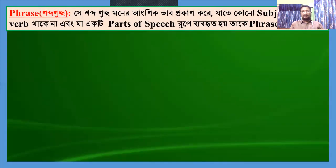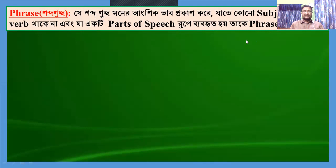Dear students, today I am going to teach you phrase and idioms. Phrase — shabda guccho. Je shabda guccho maner angshik bhav prakash kore, jate kono subject o finit bhav thaakena. A phrase is a part of a sentence. It has neither subject nor finite verb, but it is used for expressing a partial expression.